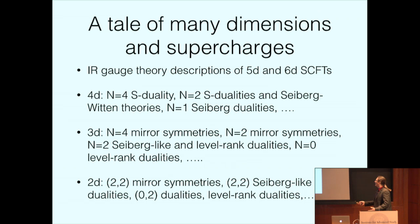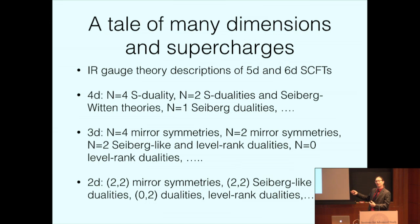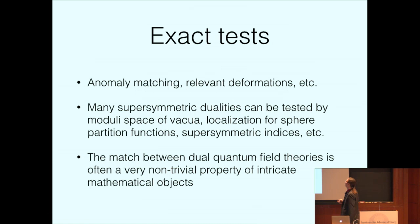In two dimensions we have mirror symmetries, Seiberg-like dualities, new dualities involving (0,2) theories, and level-rank dualities for rational conformal field theories. All of these lines seem to live in their own world. Sometimes you can derive dualities in lower dimensions from higher dimensions. But when you start thinking about interfaces, boundary conditions, and other defects, you put all these ingredients into play.